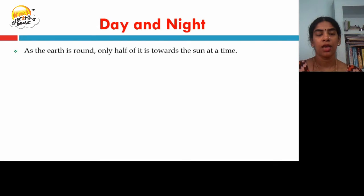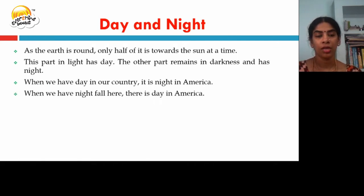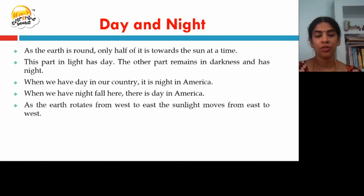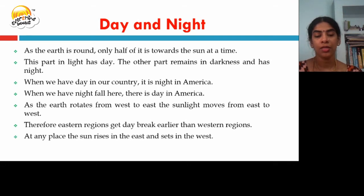As the earth is round, one side of it faces the sun at a time. This part is light and the other part remains dark. When we have day in our country, it is night in America, and when we have night, there is day in America. As the earth rotates from west to east, sunlight moves from east to west. Therefore, eastern regions get daybreak earlier than western regions. At any place, the sun rises in the east and sets in the west.